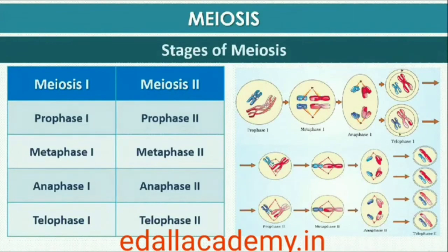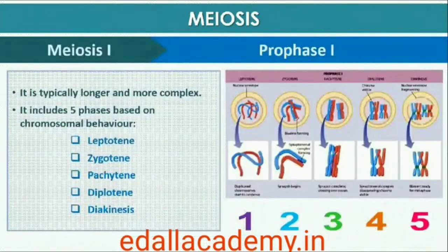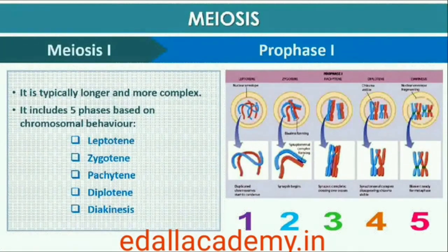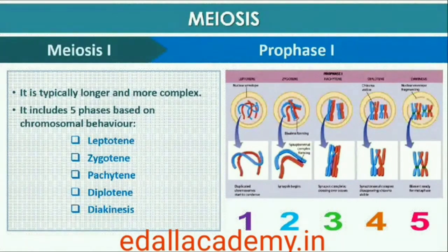Prophase of the first meiotic division is typically longer and more complex when compared to prophase of mitosis. It has been further subdivided into the following five phases based on chromosomal behavior: leptotene, zygotene, pachytene, diplotene, and diakinesis.